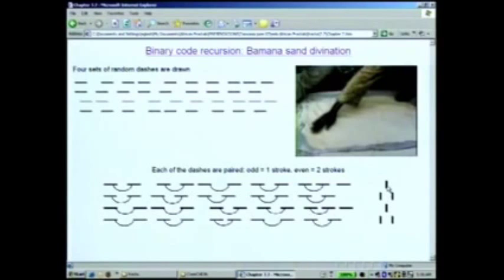So each of these symbols has four bits, it's a four-bit binary word. You draw these lines in the sand randomly, and then you count off, and if it's an odd number you put down one stroke, and if it's an even number you put down two strokes.